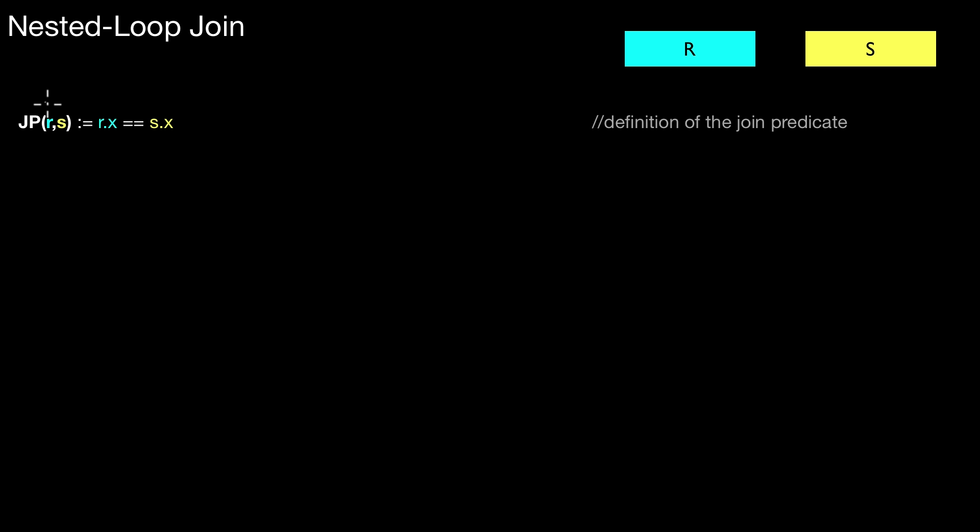So JP(R,S). That's the join predicate. It takes a tuple of R and a tuple of S as its input. And then it returns true if and only if the values of those two attributes are the same. So I assume here that both relations have an attribute X. R has an attribute X and S has an attribute X. And only if the values of those two tuples are equal with respect to the attribute X, then this predicate will return true. This is how the join predicate is defined.